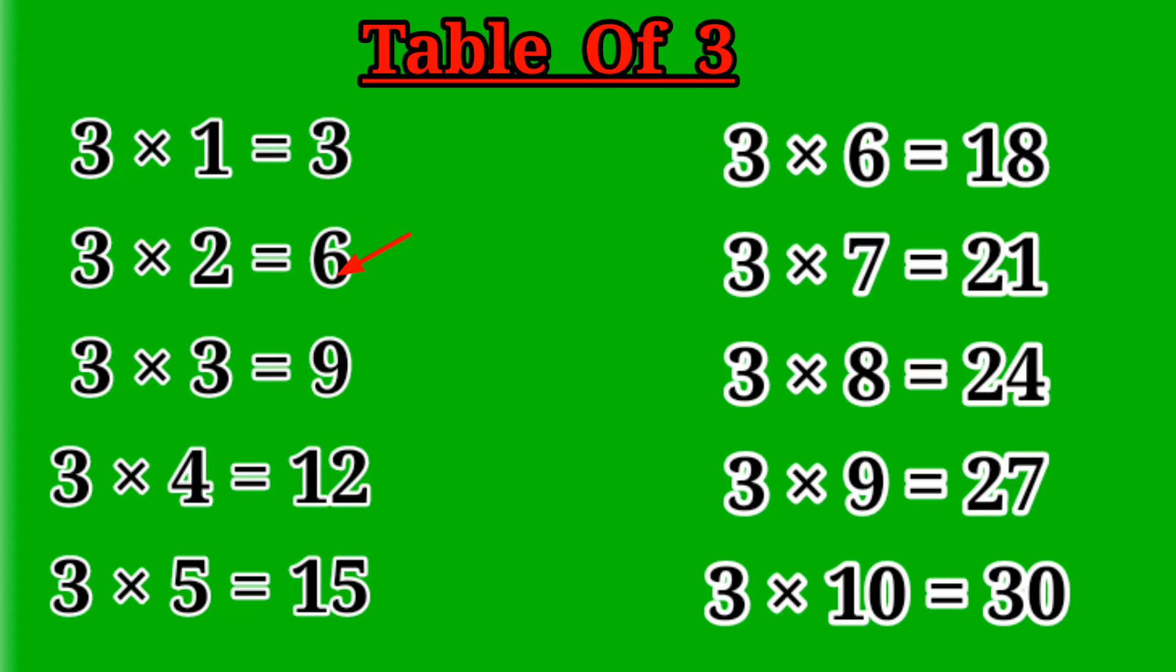Three 2s are 6. Three 3s are 9. Three 4s are 12. Three 5s are 15. Three 6s are 18. Three 7s are 21. Three 8s are 24. Three 9s are 27. Three 10s are 30.